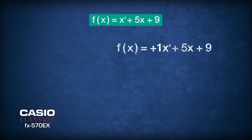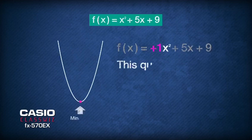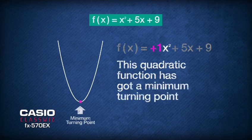First of all, notice that the coefficient of x squared is positive 1. That means this quadratic function has got a minimum turning point.